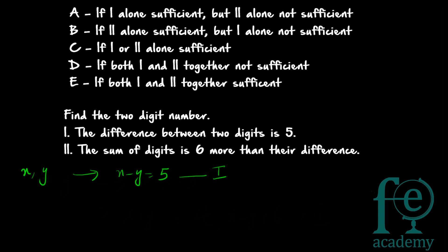By using the equation x minus y equals 5 alone, are you able to solve for x and y? You will not be able to. If there are two unknown variables, you must have two equations to solve them. For example, 5x equals 10 has only one unknown, so you can solve it as x equals 2. But with two unknowns you need two equations, so using statement one alone you cannot get the answer.